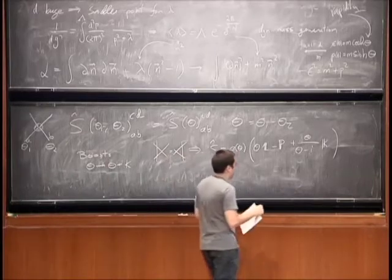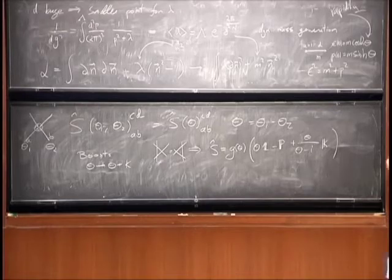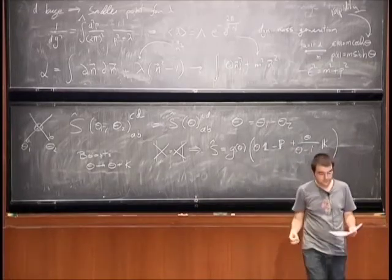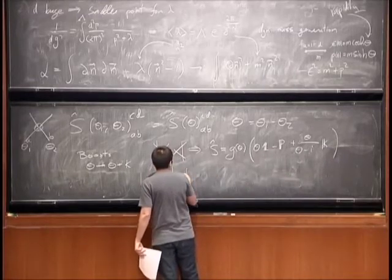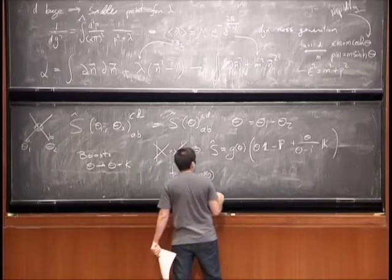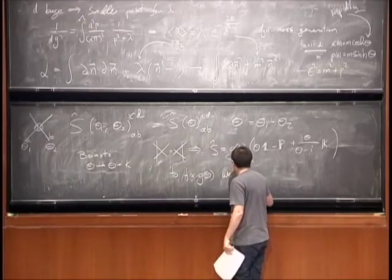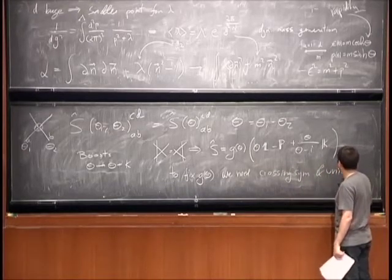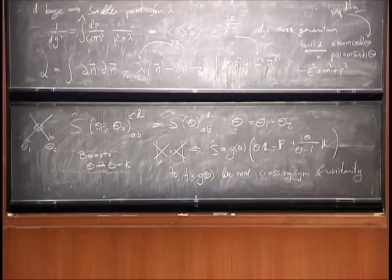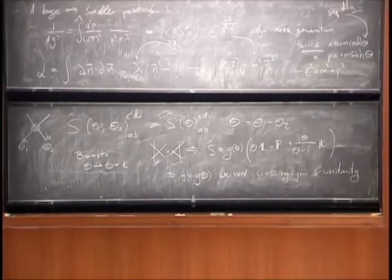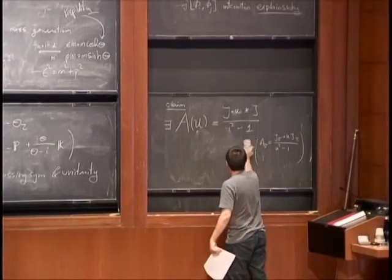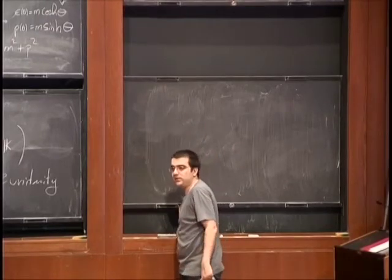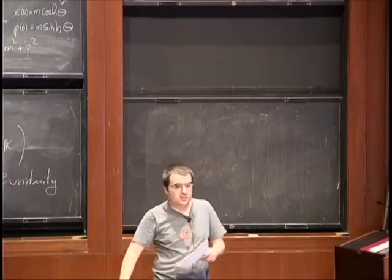To find this function we need to use what's called crossing symmetry. Let me emphasize how remarkable this is: we assumed just a bit of symmetry and Yang-Baxter, and we already did most of the job — there's only one function to fix. As Juan explained, to fix this overall factor — normally called the dressing factor — we need some extra input: crossing symmetry, unitarity, and so on.